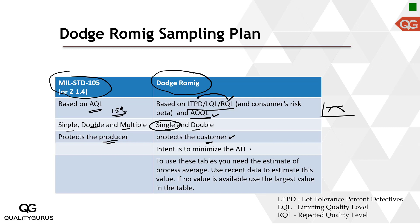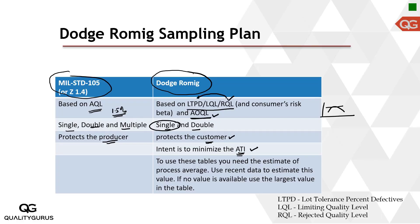The intent of Dodge-Romig tables is to minimize ATI — average total inspection. On average, how many inspections do we perform? If we have a poor quality lot, more lots get rejected and those rejected lots must go through 100% screening, leading to more inspections. We plotted a curve for ATI versus lot quality: if lot quality goes bad, we end up doing more and more inspections, eventually approaching 100% inspection.